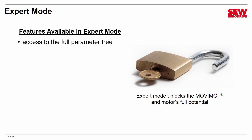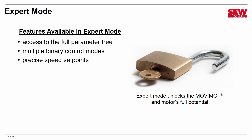So what can you do with Expert Mode? First, you have access to the full parameter tree. In our last session we examined some read-only parameters accessible in Easy Mode, but almost all read-write parameters could not be changed in Easy Mode. Second, you have multiple binary control modes available. In Easy Mode, you just have one, where you can select clockwise, counterclockwise, and switch between F1 and F2 speeds. But Movimot actually has several binary control modes with different combinations of binary inputs.